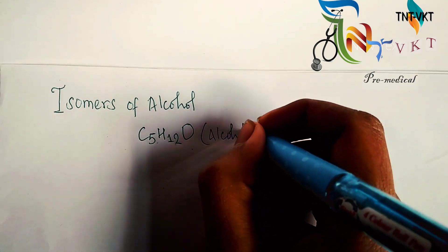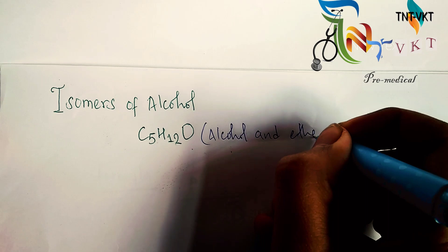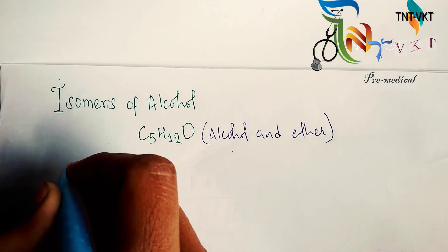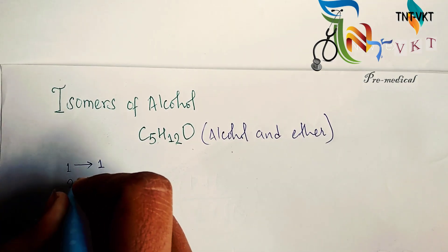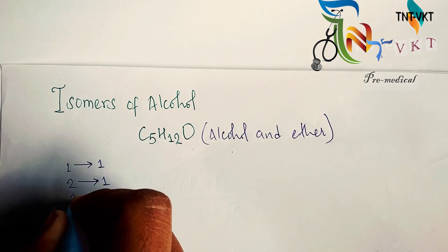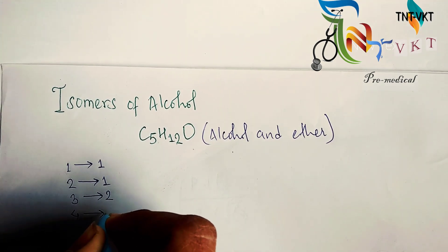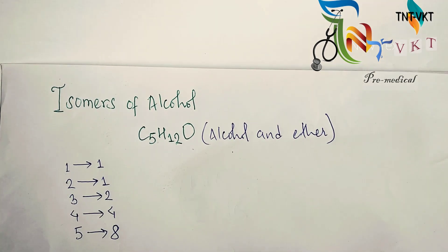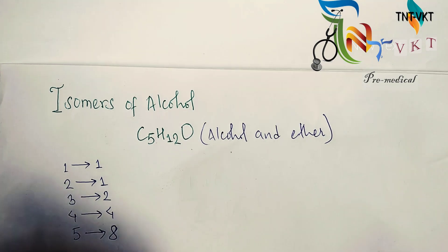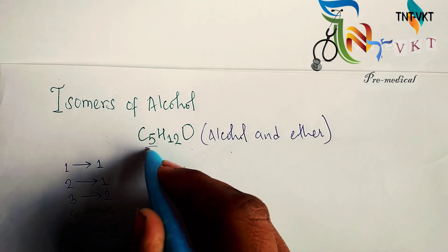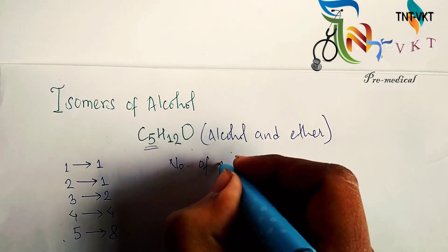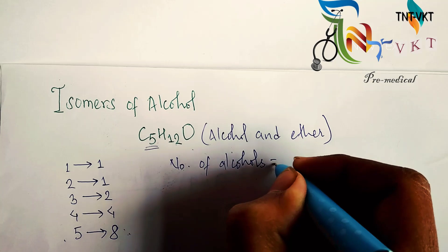First of all, we are going to find the alcohols. The formula is: 1→1, 2→1, 3→2, 4→4, 5→8. Using this formula, you will find the number of alcohols. For carbon number 5, this means you have 8 alcohols.